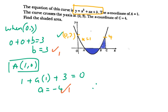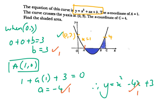So your equation will be y equals x squared minus 4x plus 3. That's the equation of the curve. To proceed, we need to find the coordinate of B, because we need to get the limits for integration.